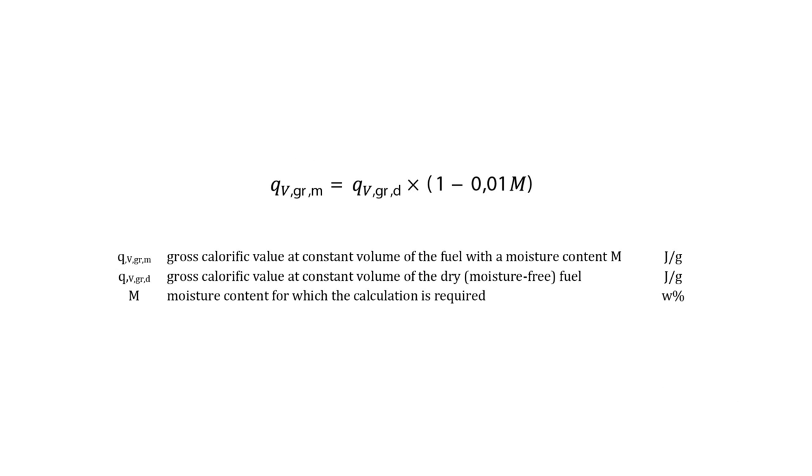The calorific value at constant volume required for any particular moisture content basis is derived from the following equation. The result shall be reported to the nearest multiple of 10 joules per gram with unambiguous statements concerning the state's constant volume, gross, and moisture basis.